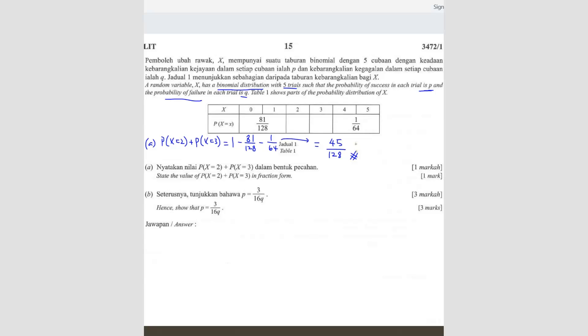Question B. Hence, show that P equals to 3 over 16Q. So they said hence, right? So that means you have to use the answer from A.